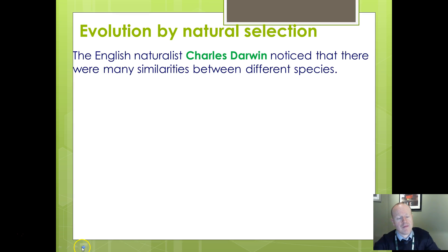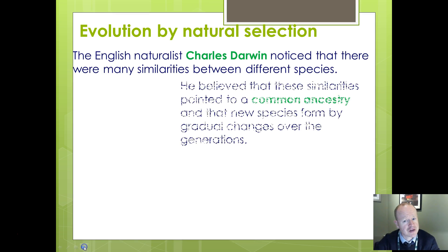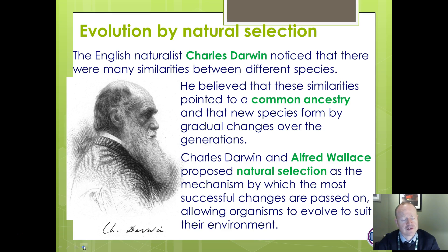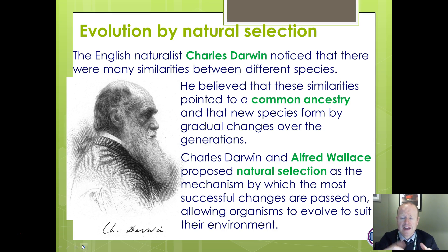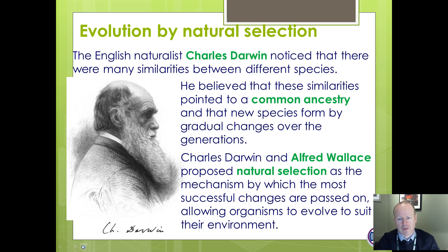Charles Darwin is the man who is credited with the theory of evolution, but actually there were two people who made important contributions. Darwin and Wallace both proposed a theory of natural selection. Evolution was not really just Darwin's theory alone. He was one of the people who collected lots of evidence to support the theory and published a paper to show that it was a viable theory.